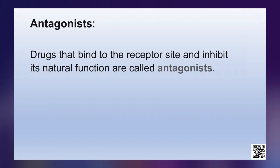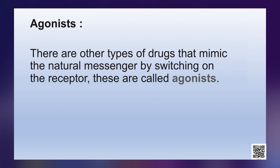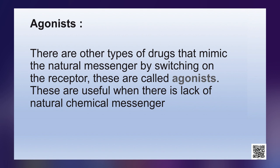There are a large number of different receptors in the body that interact with different chemical messengers. These receptors show selectivity for one chemical messenger over another because their binding sites have different shape, structure and amino acid composition. Drugs that bind to the receptor site and inhibit its natural function are called antagonists. Drugs that mimic the natural messenger by switching on the receptor are called agonists, and are useful when there is a lack of natural chemical messenger.